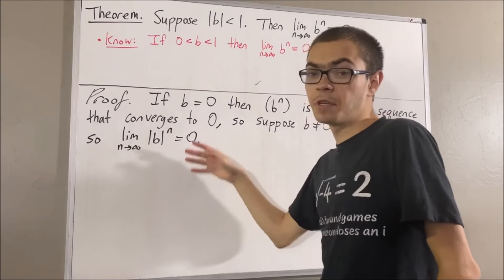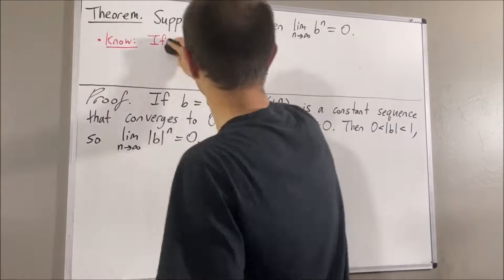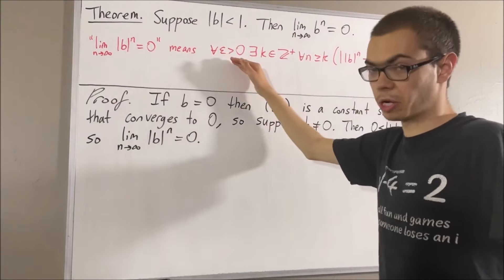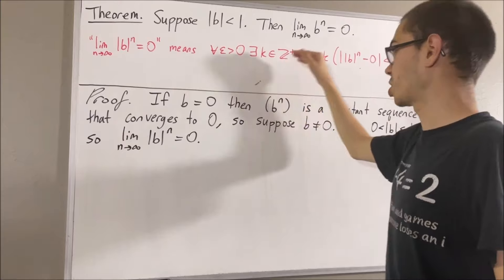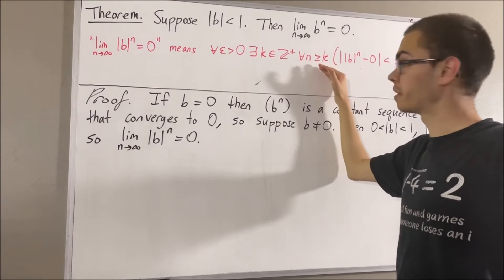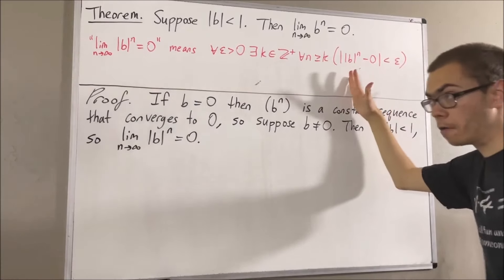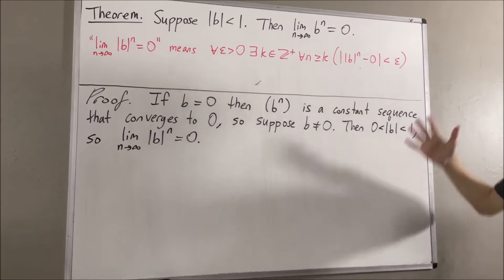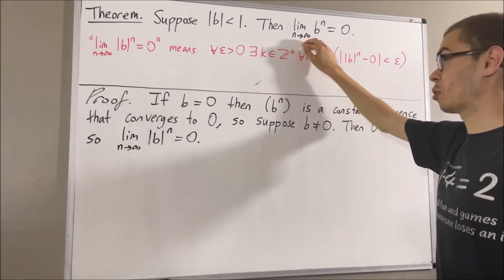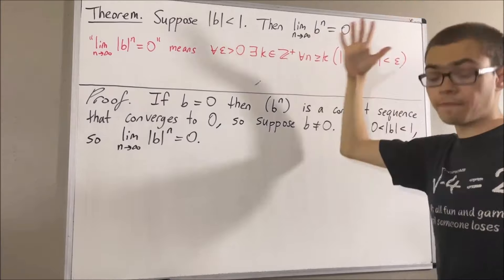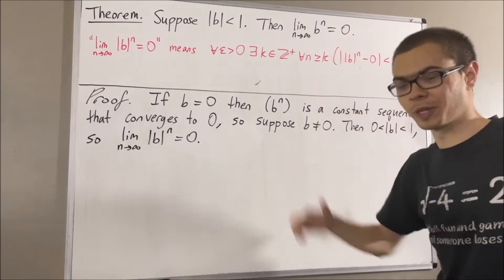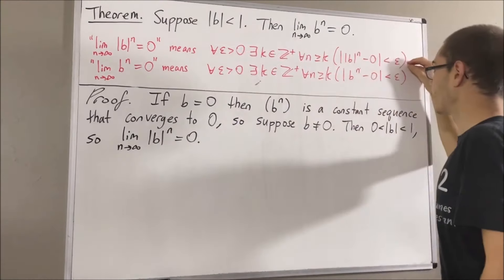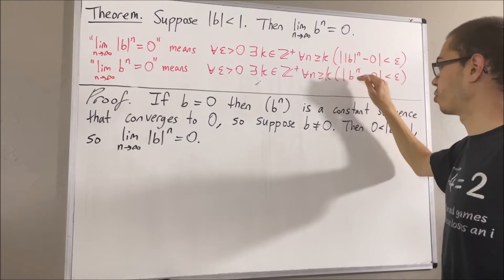What does this mean? By definition of the limit of a sequence, it means the following: for every epsilon greater than 0, there exists a positive integer k such that for all positive integers n greater than or equal to k, the absolute value of the absolute value of b to the n minus 0 is less than epsilon. Now, our goal is to prove the limit as n approaches infinity of b to the power of n is equal to 0, and by definition of the limit of a sequence, this means the same thing above, except the absolute value of b to the power of n is replaced with b to the power of n.